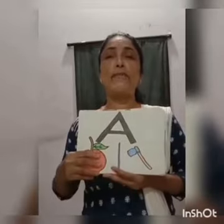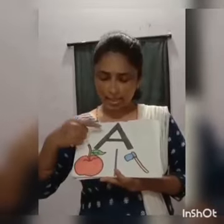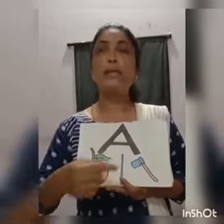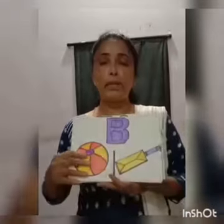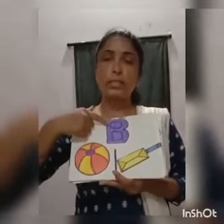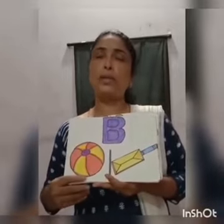A for apple. This is A. A for apple, A for axe, A for arrow. Next — B. B for ball. This is B. B for ball, B for bat, B for balloon, B for butterfly.